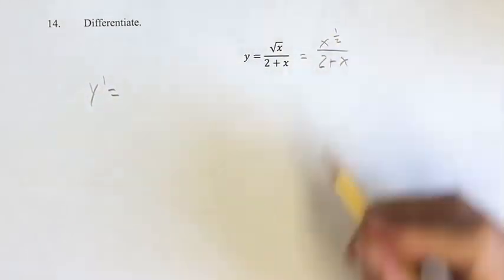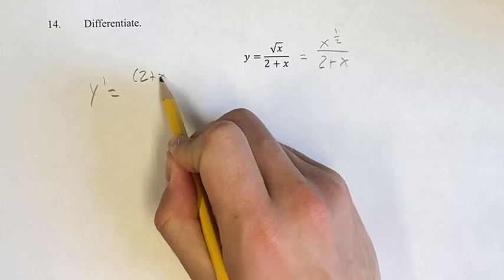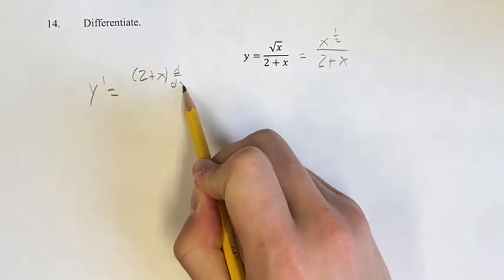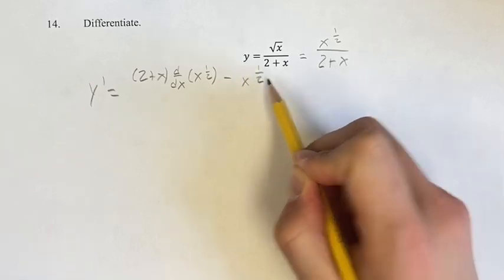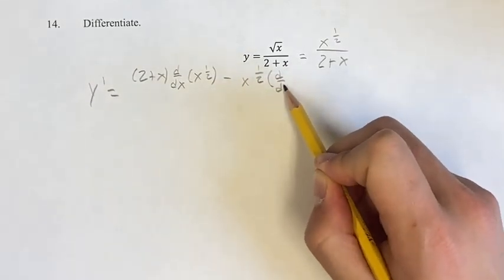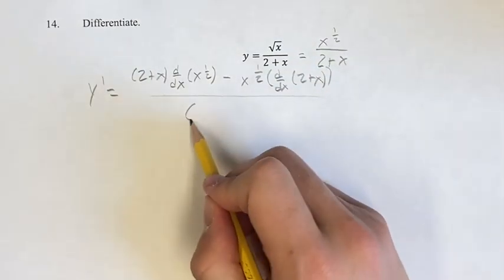Anyways, we have a fraction here, so we're going to use the quotient rule. It's going to be the denominator times the derivative of the numerator minus the numerator times the derivative of the denominator. And all of this is going to be over the square of the denominator.